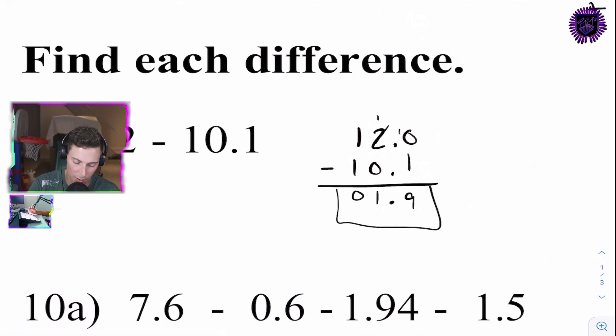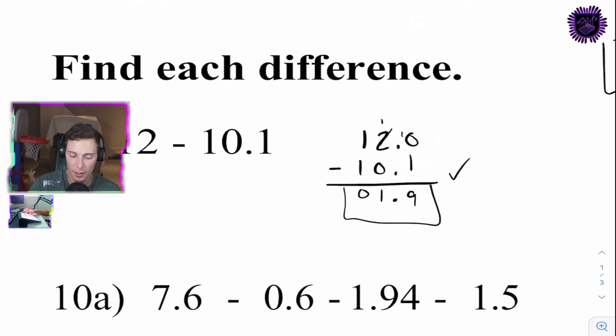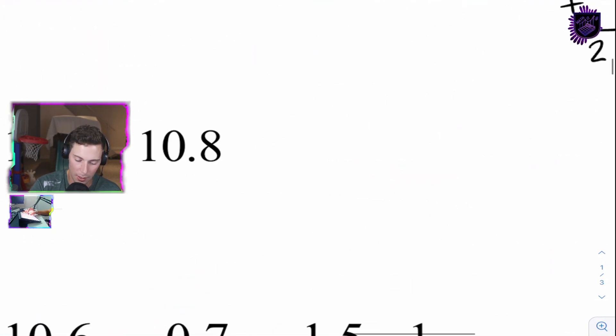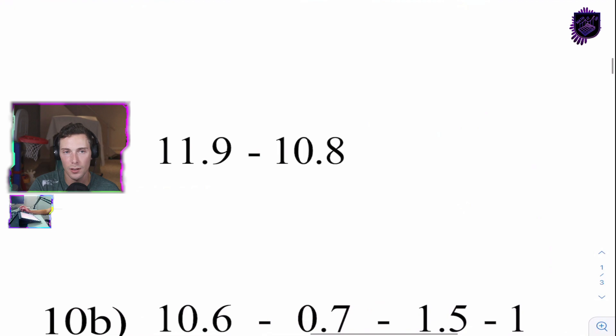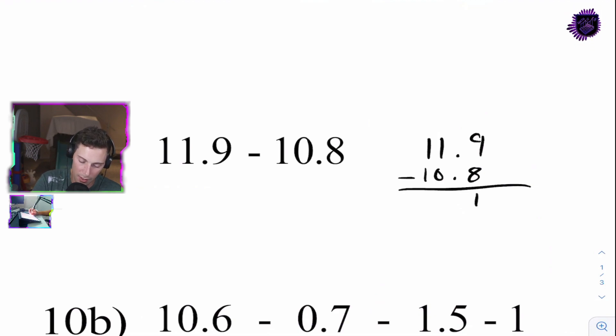You always want to check your answer on the bottom, and then check your answer at the bottom. Go back. Box your answer. Check your answer to show that you've corrected your work. 11.9 minus 10.8. Oh, this one's nice, because there's no borrowing. That's going to be 1. That's going to be 1. That's going to be 0. Drop down my decimal. My answer is going to be 1.1.